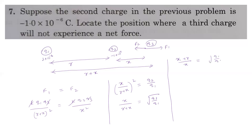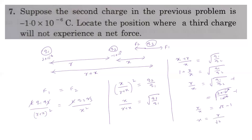So 1 + r/x = √(q1/q2), giving r/x = √2 − 1. Therefore x = r/(√2 − 1) = 10/(√2 − 1), which simplifies to approximately 24.1 centimeters from the smaller charge q2.